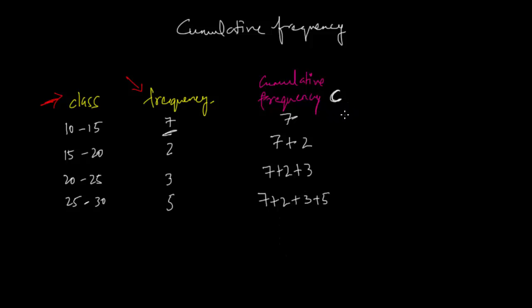So when we put the final value, the first one is going to be 7 as it is, and then 7 plus 2 is 9, and then 7 plus 2 plus 3 is 12, and then 7 plus 2 plus 3 plus 5 is 17. And that's how we find the cumulative frequency.